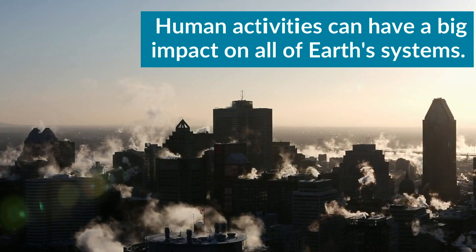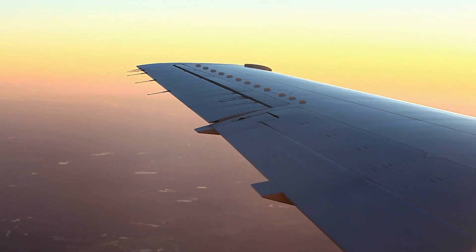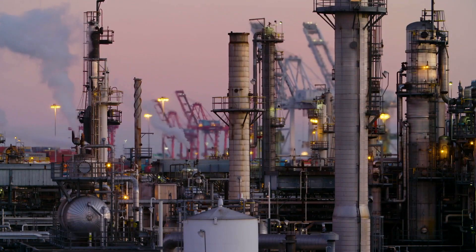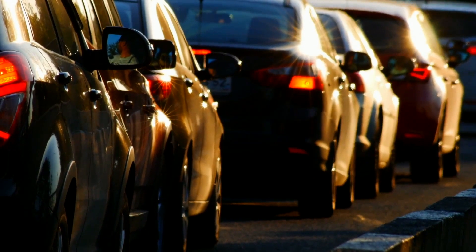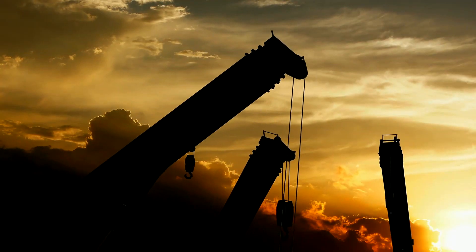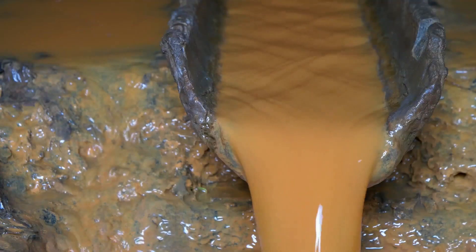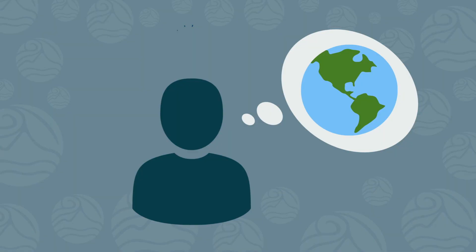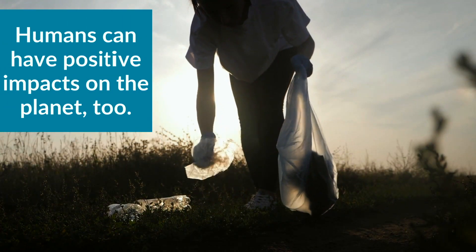Human activities can have a big impact on all of earth's systems. The burning of fossil fuels releases pollutants into the atmosphere, which can harm humans and other animals in the biosphere. Construction can increase erosion of the geosphere, and the resulting sediment can get dumped into waterways, where it affects the water quality within the hydrosphere. Fortunately, by understanding how earth systems interact, humans can have positive impacts on the planet too.